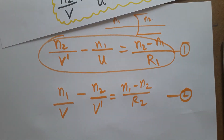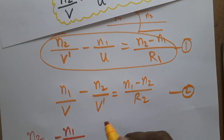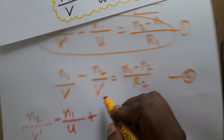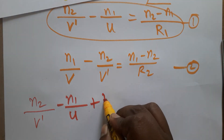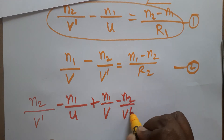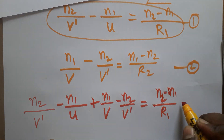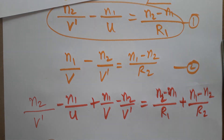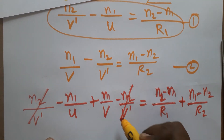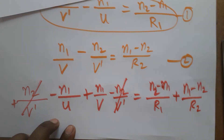Now we are going to add equation one and equation two directly. Adding the left-hand sides: n2/v dash minus n1/u, plus n1/v minus n2/v dash. On the right-hand side we add (n2 minus n1)/R1 plus (n1 minus n2)/R2. The n2/v dash terms cancel out — positive and negative cancel directly.